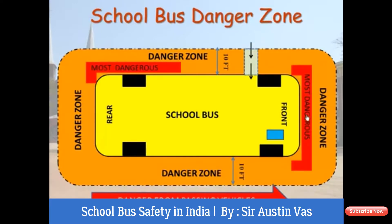That is, right in front of the bus with a distance of less than 10 feet, the rear left-hand side where the visibility to the driver is lesser, and the right-hand side of the bus where the danger is mainly from the passing vehicles. The students must be extremely careful of this danger zone both while boarding the bus as well as exiting the bus, both at the school campus as well as while getting down from the bus at their bus stop.